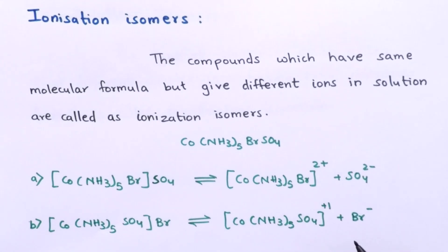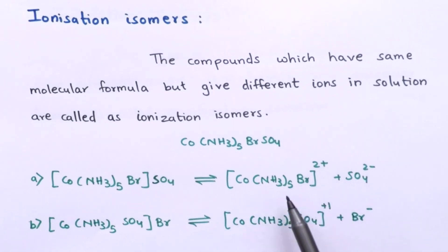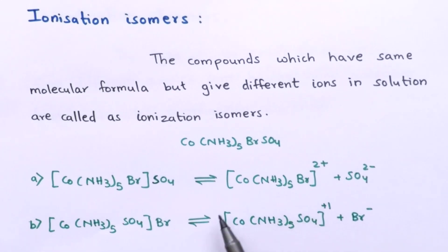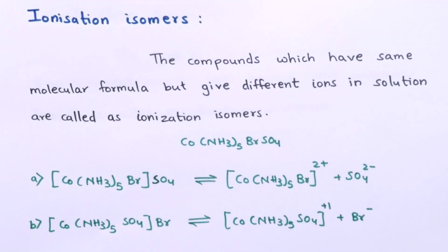So there are two different ions being produced. We can also see a color difference: [Co(NH₃)₅Br]²⁺ is red in color, while the other complex is red-violet. Even though they have the same molecular formula, they produce different ions when dissolved in solution — therefore these are ionization isomers.